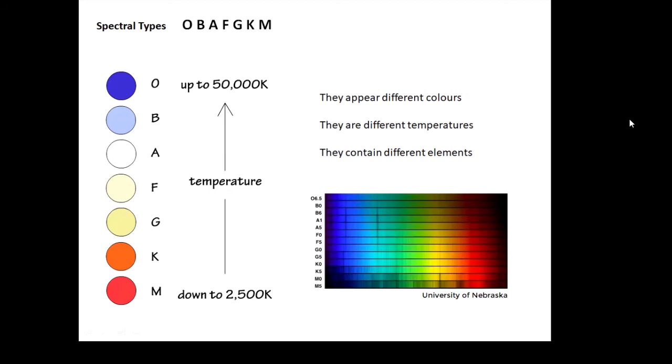They appear different colors, they have different temperatures, and they contain different elements as well, so the black lines are in different positions.